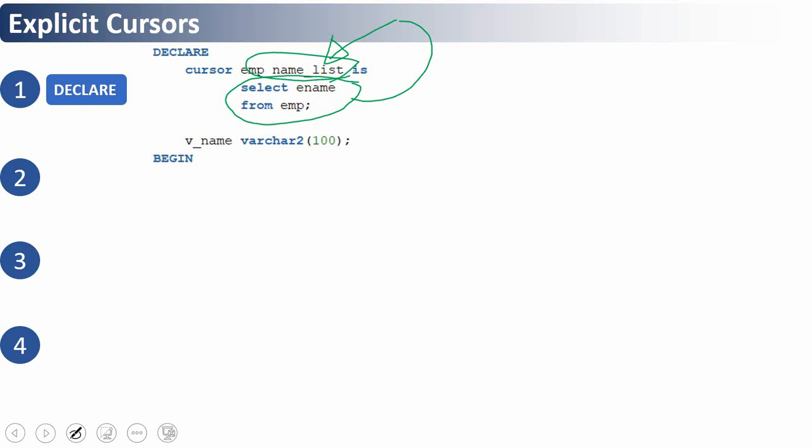This name is called the cursor variable or cursor name, and we declare it using the keyword CURSOR. This is called cursor declaration and it should be within the declaration section — that is, between the DECLARE and BEGIN keywords. In essence, we are giving a name to, or creating a pointer to, a select statement.